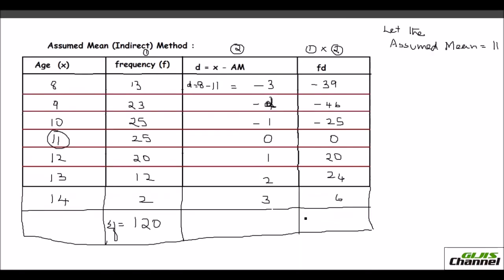Now find the total of the fd column — this is sigma fd. Adding all the negative values gives minus 110. Adding all the positive values gives 50. When you add these two together you get minus 60. So sigma fd is negative 60.